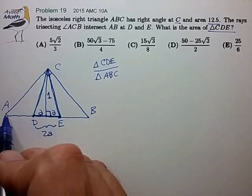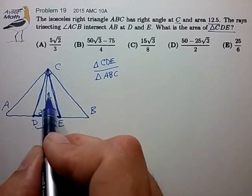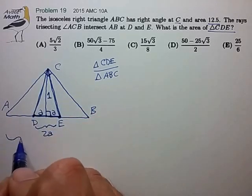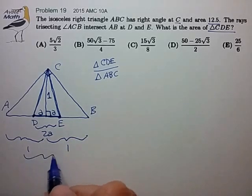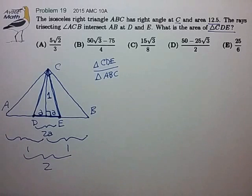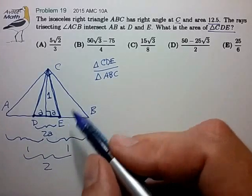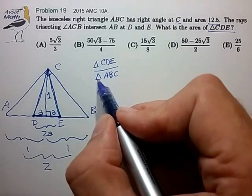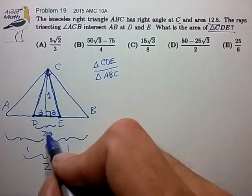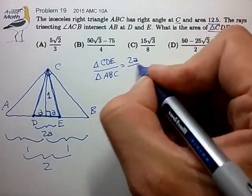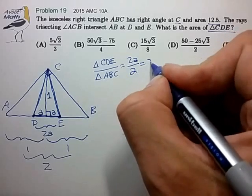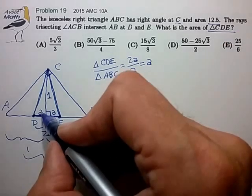And the base length of ABC is simply the base length 2A divided by 2, and that's simply A. So what exactly is A?